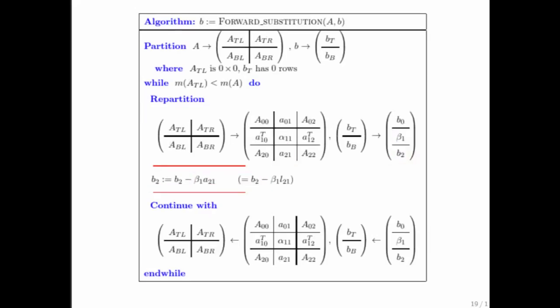Recall the algorithm for forward substitution that we got by taking the multipliers, or the Gauss transforms, and applying them after the matrix had already been reduced to an upper triangular matrix. At that point, all of these multipliers were sitting below a. And if you look at the algorithm for forward substitution, this is the update that had to happen.